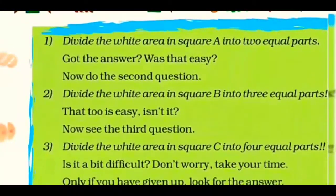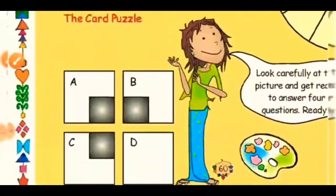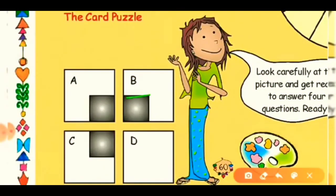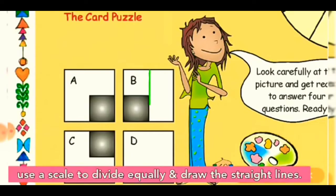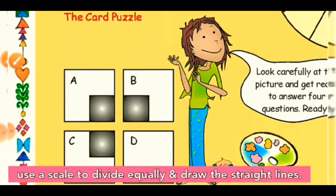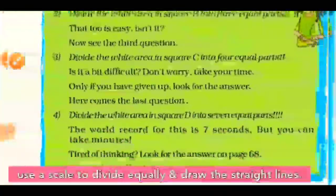The second question: divide the white area in square B into three equal parts. The first part is already colored, so leave that. For the white portion, you can easily identify three small squares. Draw straight lines — first one here, and the second one here — and now all parts are equal, meaning one-third each. Clear!